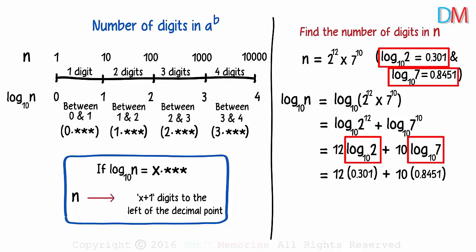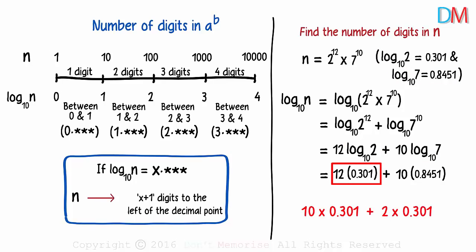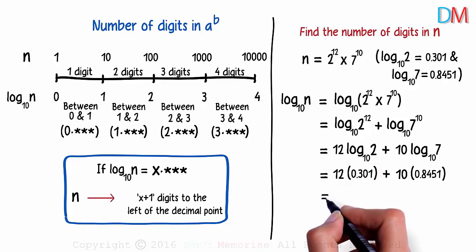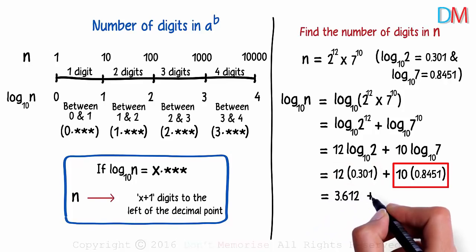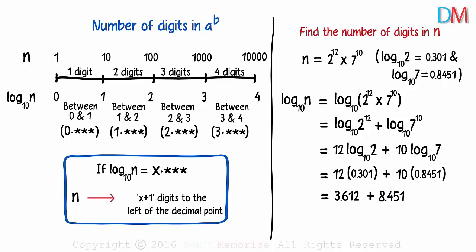Substituting them here, we get this expression. Now these calculations are pretty easy. The first term can be written as 10 times 0.301 plus 2 times 0.301. 3.01 plus 0.602 will equal 3.612. And this will be 8.451. This sum equals 12.063.